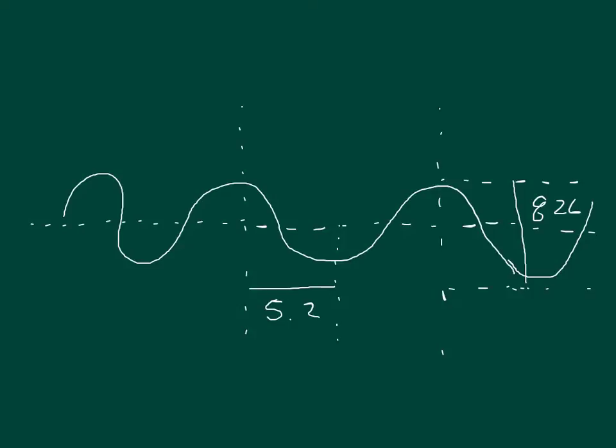A, find the amplitude. B, find the wavelength. C, find the period. And D, find the speed of the wave.